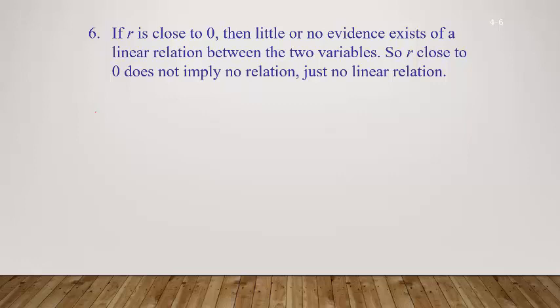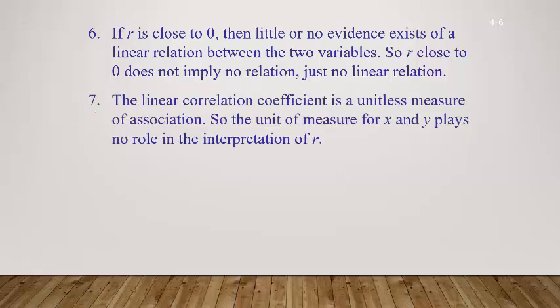If R is close to zero, little or no evidence exists of a linear relationship between the two variables. R close to zero does not imply no relationship at all — just no linear relationship. Finally, the linear correlation coefficient is a unitless measure of association, so the units of X and Y play no role in the interpretation of R.